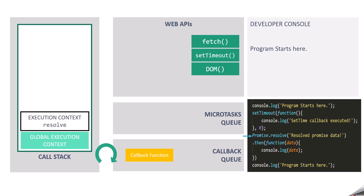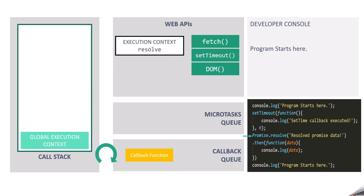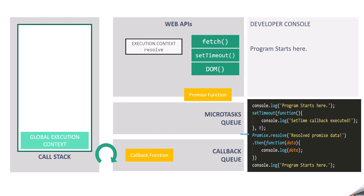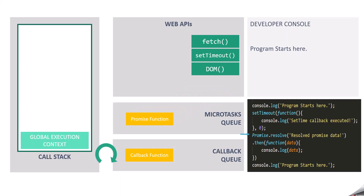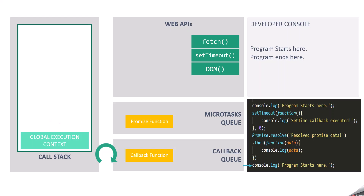Then we have the promise, which is also getting resolved immediately. It is handed over to the web API, and the callback function associated with the promise is registered and waits in the web API. Since the promise resolves immediately, its execution completes immediately and the callback function of this promise is pushed to the microtask queue. Then we move to the next console.log statement — another execution context is created, it logs 'program ends here', and then pops off the execution stack.